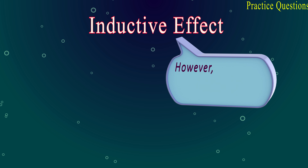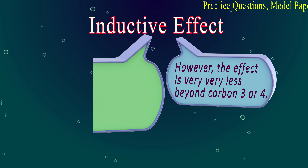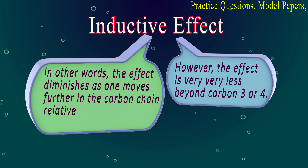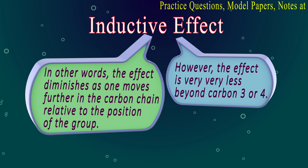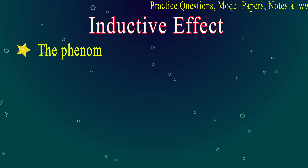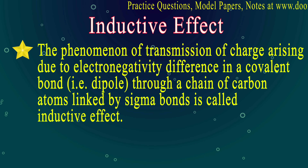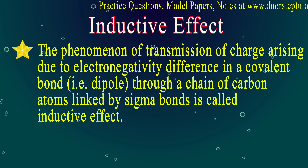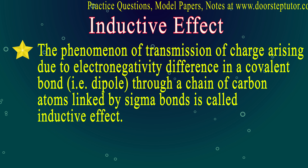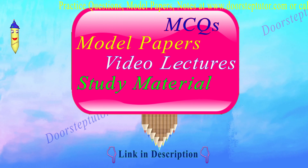The effect on carbon 3 and carbon 4 will be less. In other words, the effect diminishes as one moves further in the carbon chain relative to the position of the group — here the group is chlorine. The phenomenon of transmission of charge arising due to electronegativity difference in a covalent bond through a chain of carbon atoms linked by sigma bonds is called inductive effect.